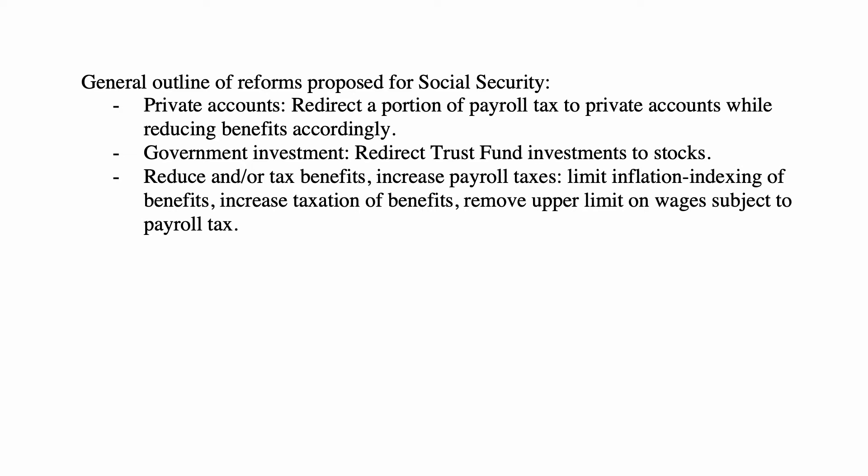Social Security benefits are not a direct investment return — what goes in and what comes out are both based on government formulas. One proposed reform was to redirect a portion of payroll tax to private accounts while reducing benefits, similar to reforms done by the Margaret Thatcher administration in the United Kingdom, where a large part of the social insurance system was redirected to private accounts with insurance companies paying benefits as annuities.